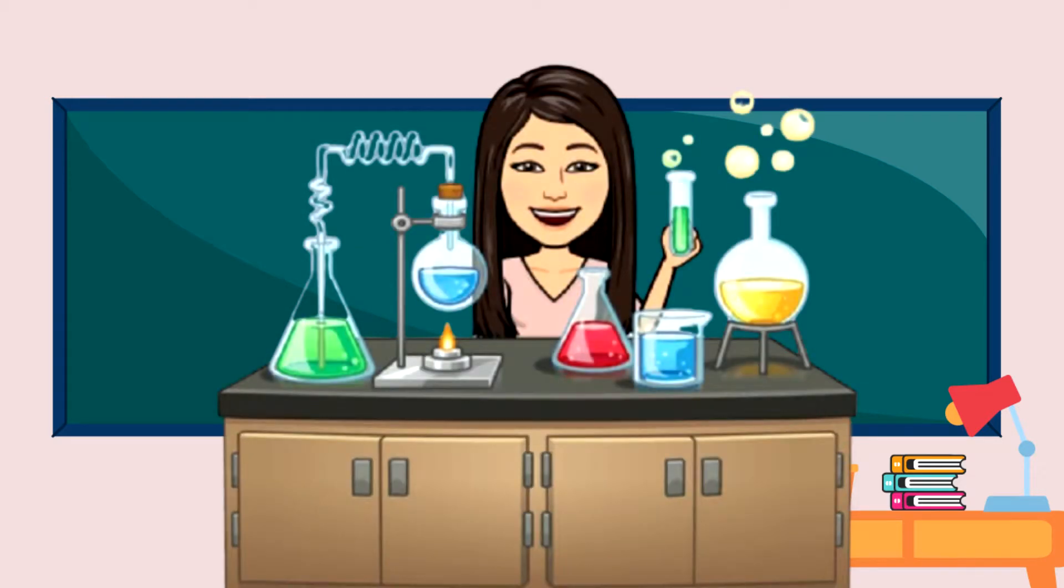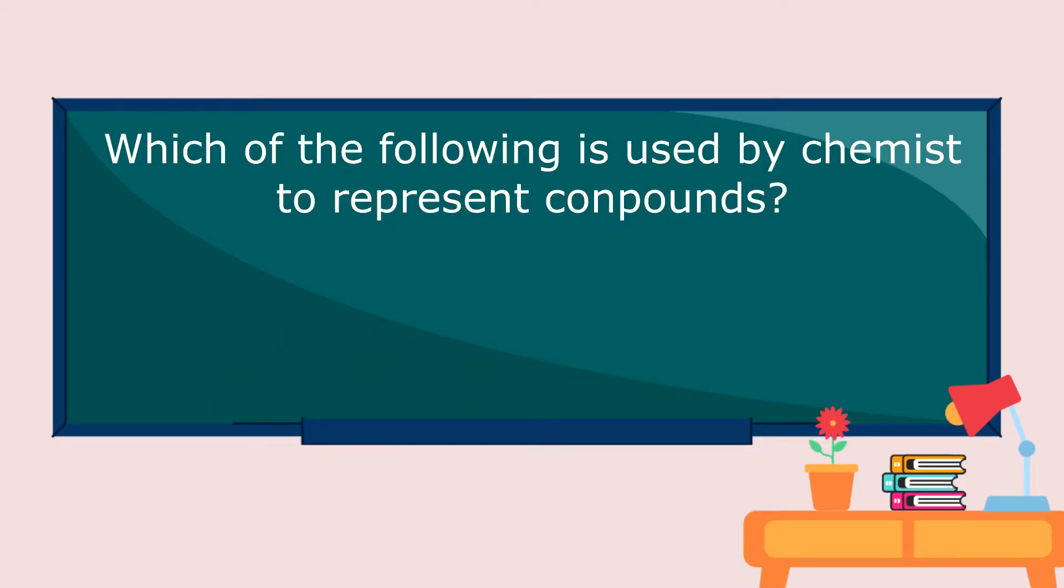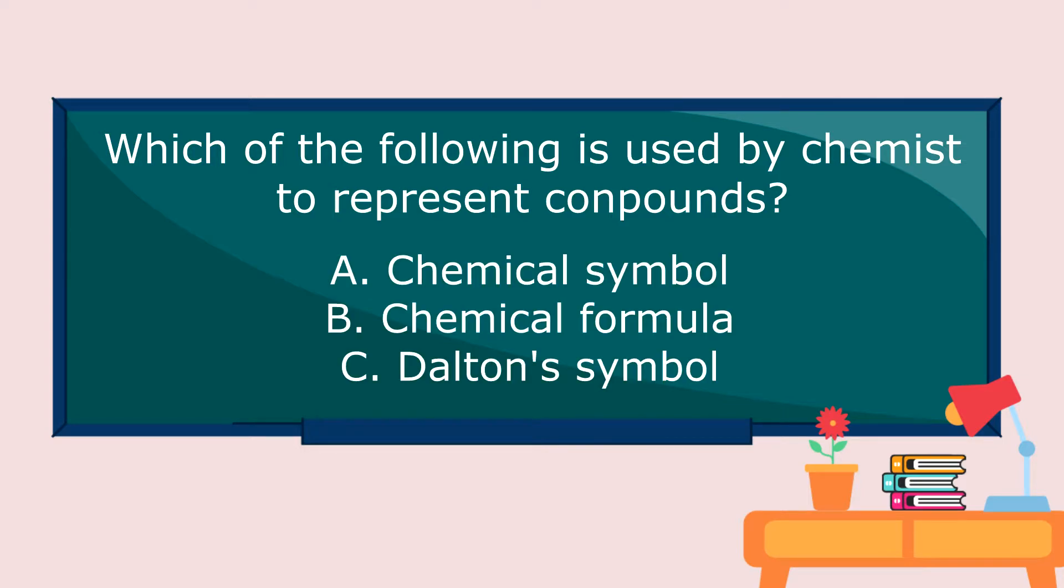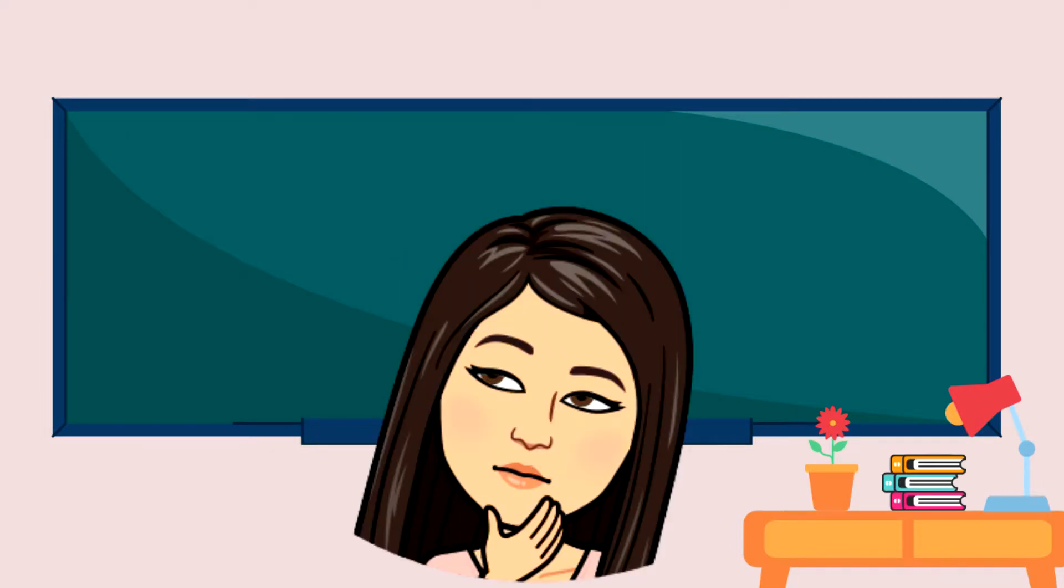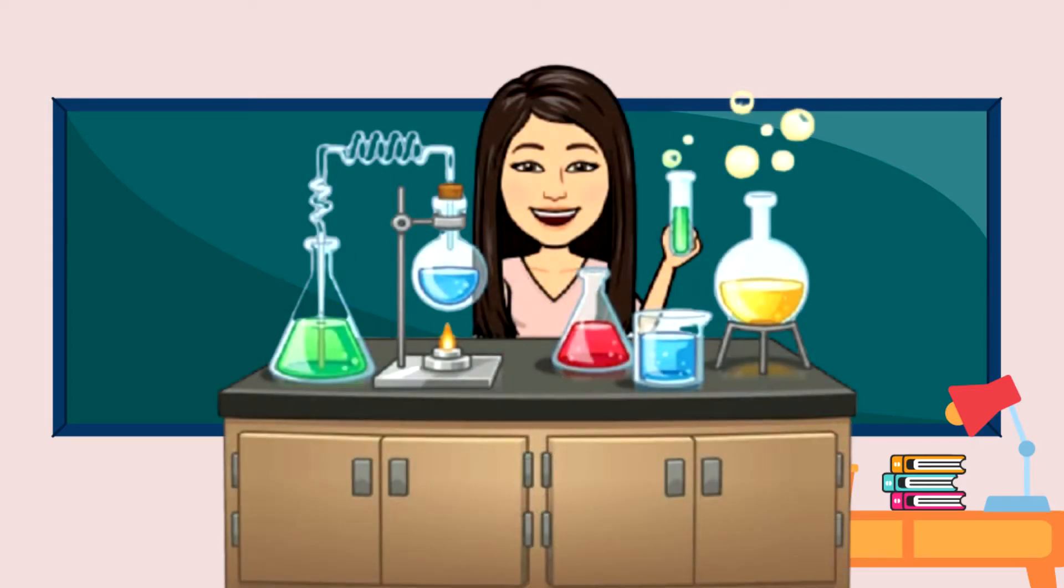Now, can you tell me which of the following is used by chemists to represent compounds? A. Chemical symbol. B. Chemical formula. C. Dalton's symbol. What is your answer? Very good. The answer is letter B.